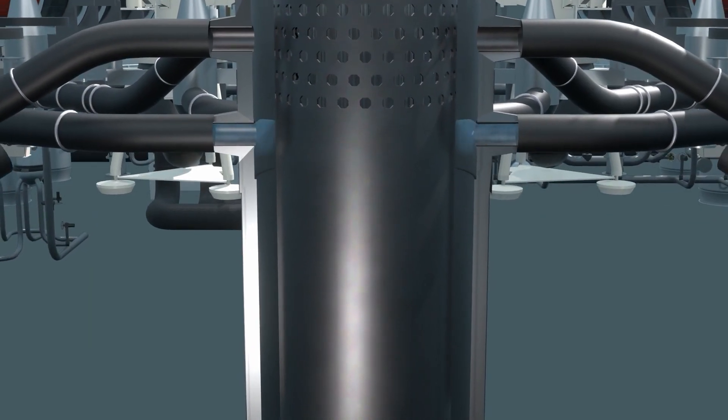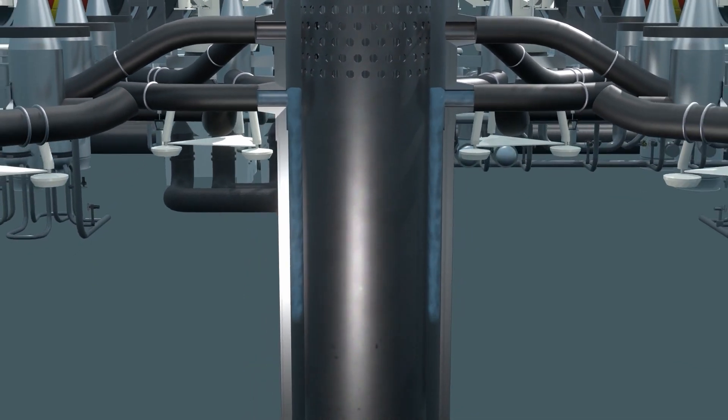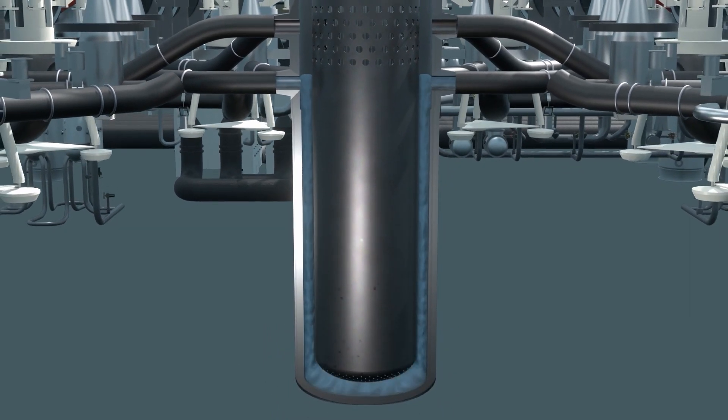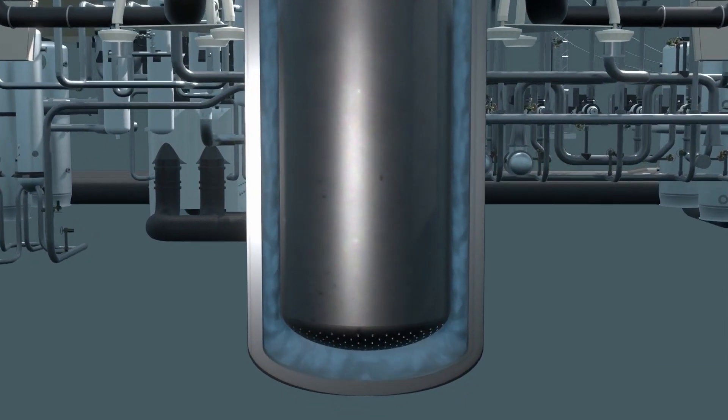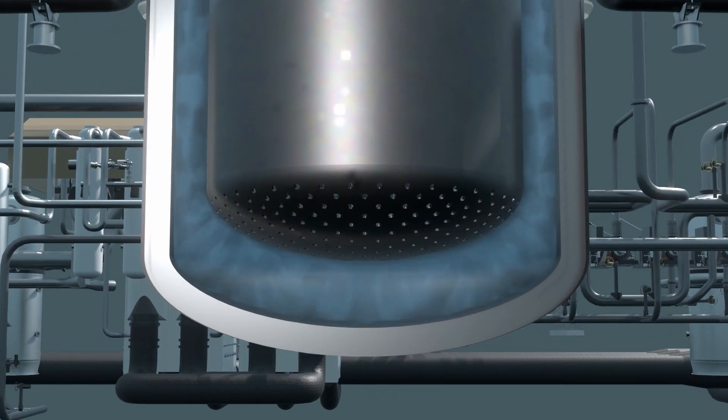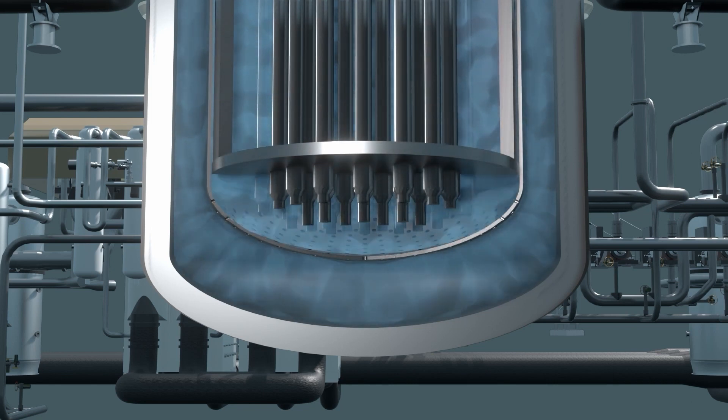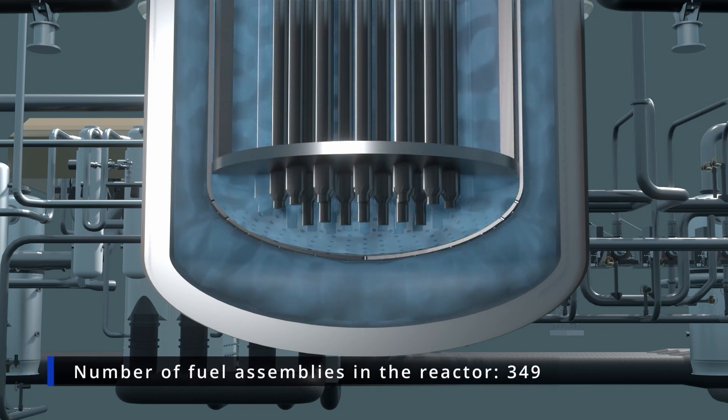On the cold branch of the main circulation loop, thanks to the main circulation pump, the primary coolant flows into the reactor. It flows between the reactor pressure vessel wall and the reactor shaft and enters the reactor interior through the perforated bottom.